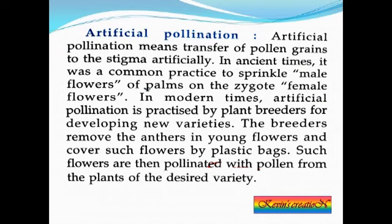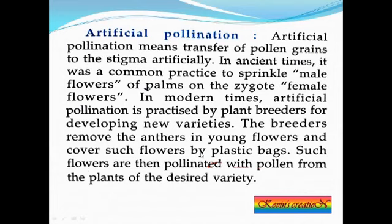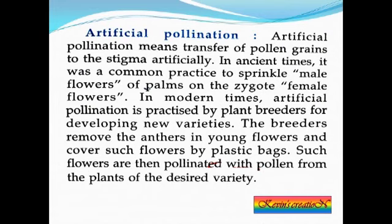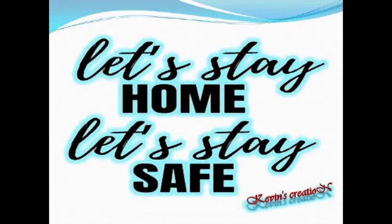Plant breeders use artificial pollination to develop new and improved plant varieties. They remove the anther from young flowers and cover those flowers with plastic bags so only the female reproductive part remains. Once fully matured, these flowers are pollinated with pollen from plants of the desired variety — whichever gives better flowers or fruit. This is how plant breeders obtain new and better varieties of plants.